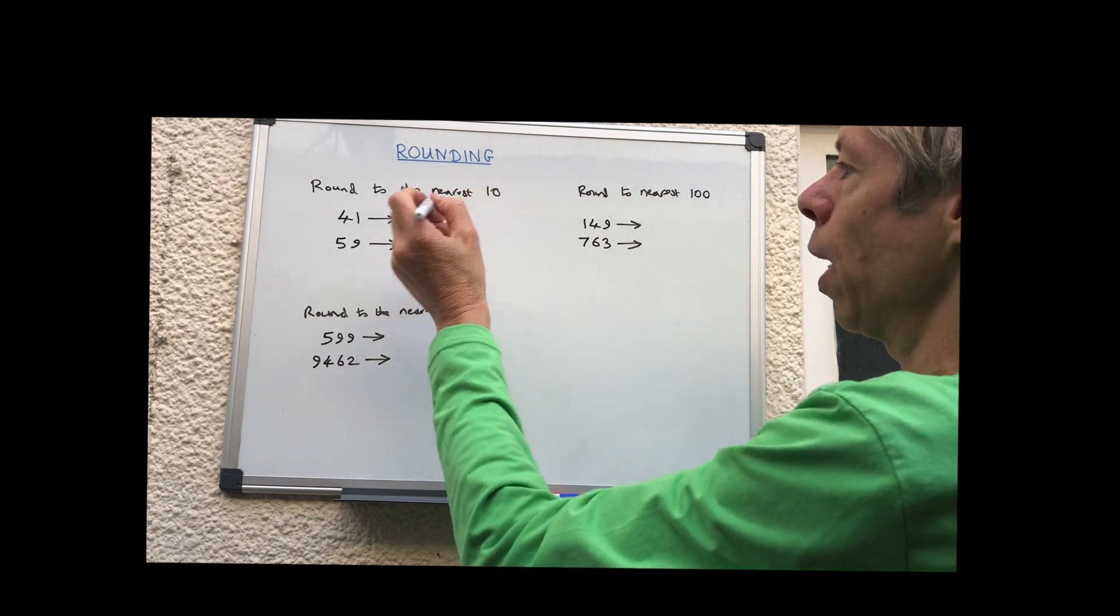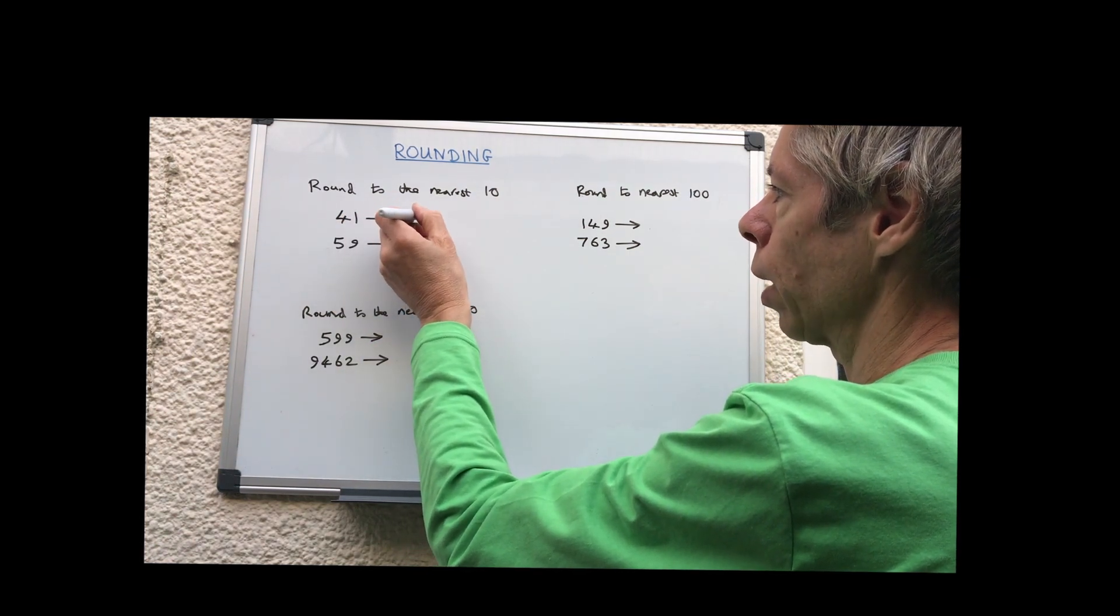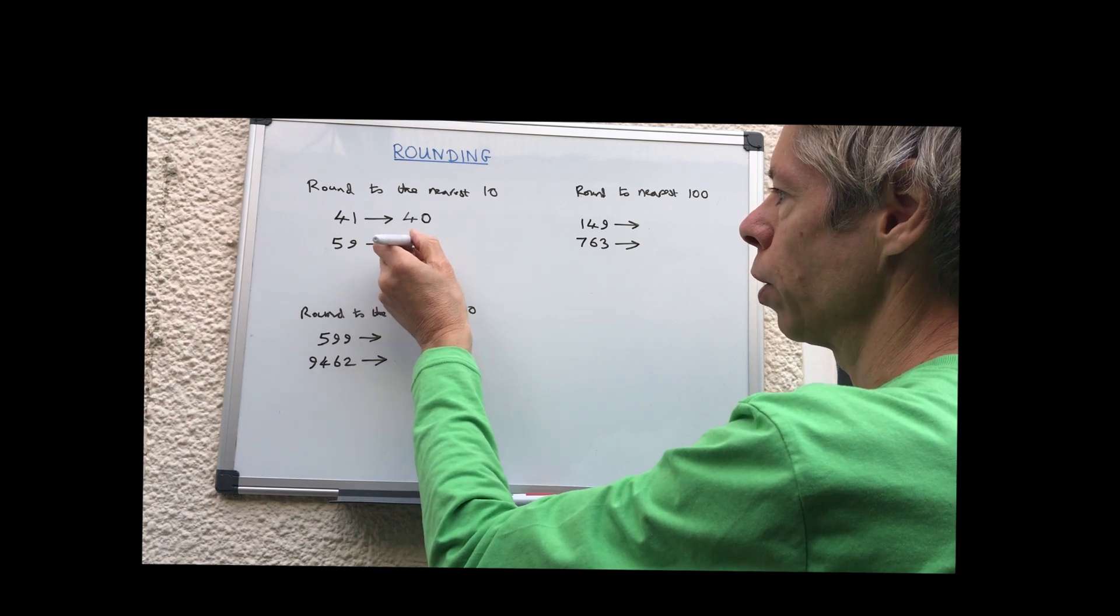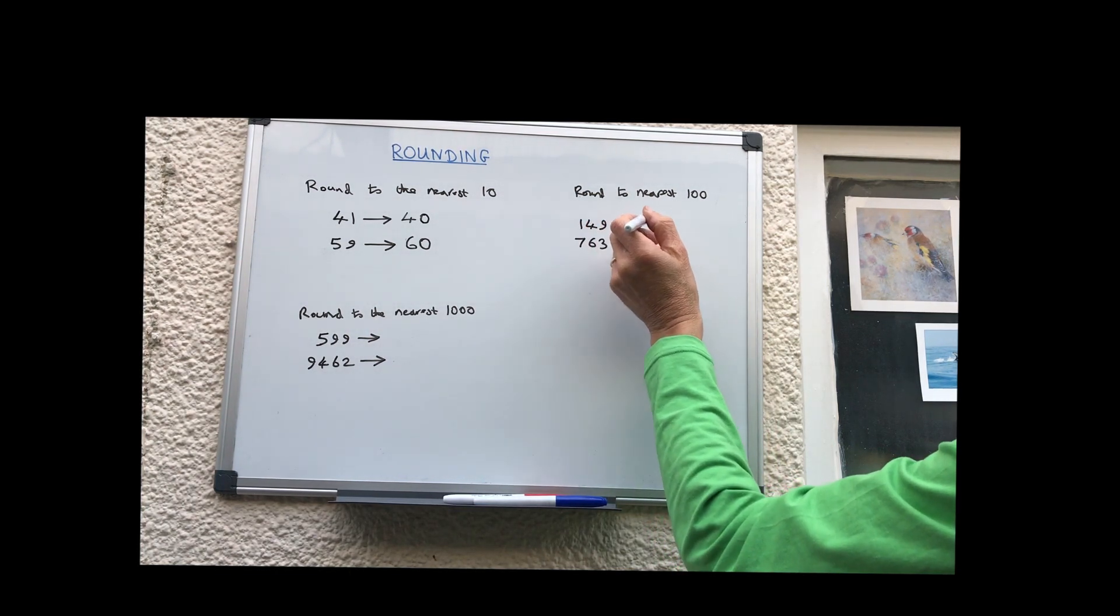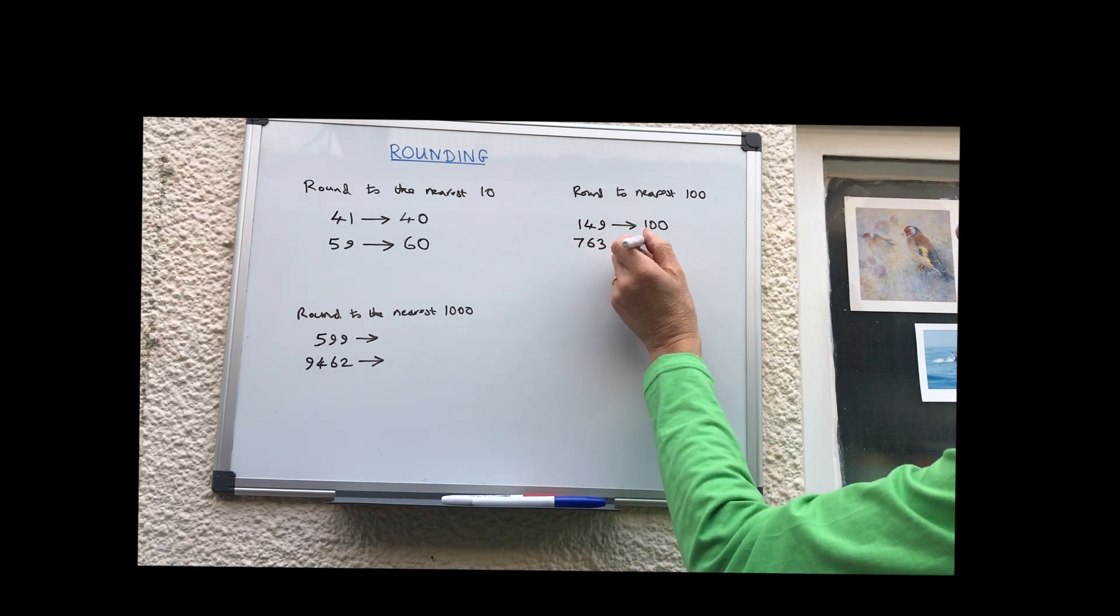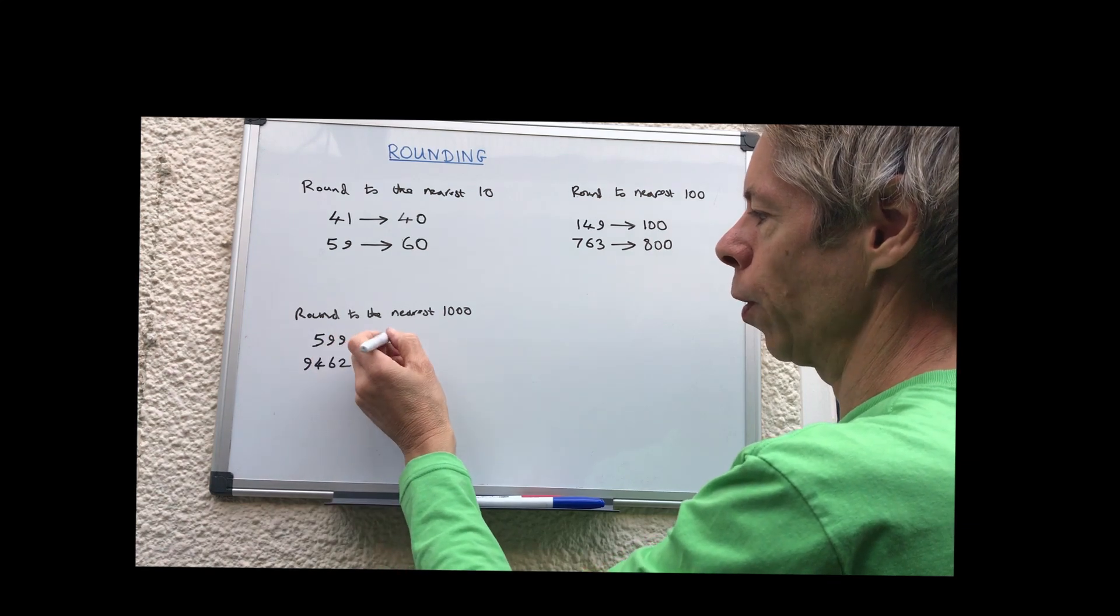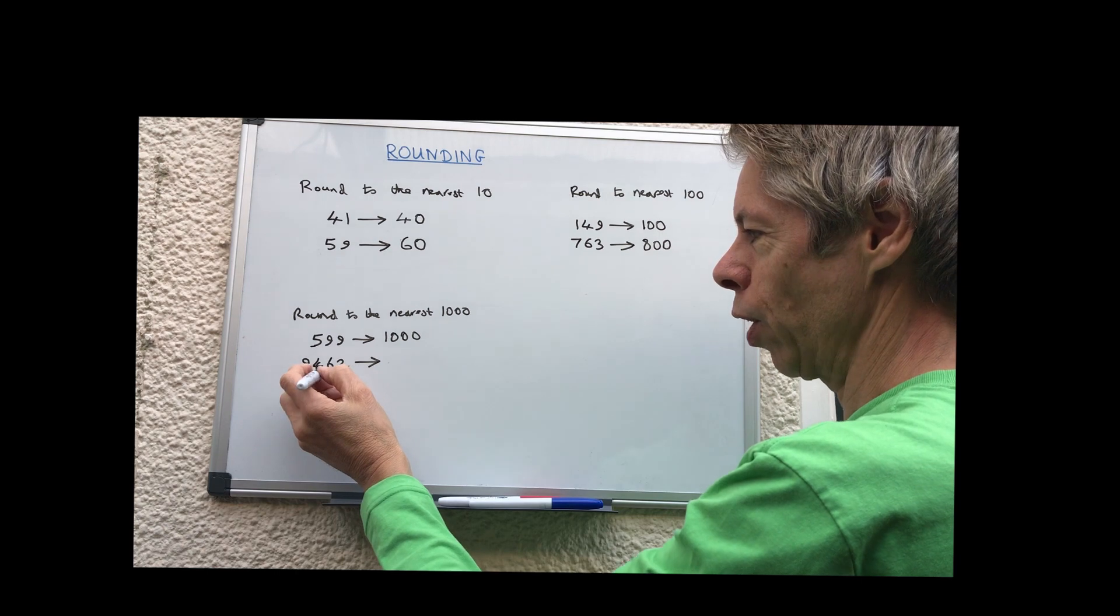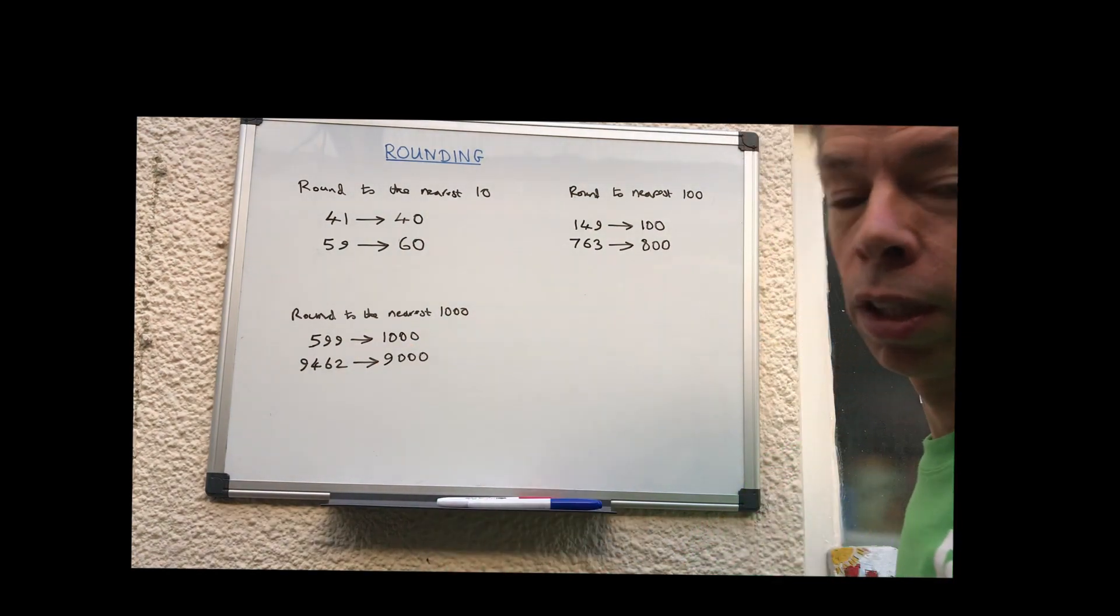OK, so let's go through the answers. So rounding to the nearest 10, the answer should normally have one zero at the end. So 41, just over 40, we'll round it back to 40 because it's below 45. This one's gone over 55 but under 60, so that will round up to 60. OK, rounding to the nearest 100. So that is between 100 and 150. It hasn't gone past 150, so it goes down to 100. This one, 763, has gone over 750, so it's going to go up to 800. OK, rounding to the nearest 1000. Well, that's between 500 and 1000, so that goes up to 1000. This is between 9000 and 9500. It's below 9500, so it will go down to 9000. So well done if you've got all of those right.